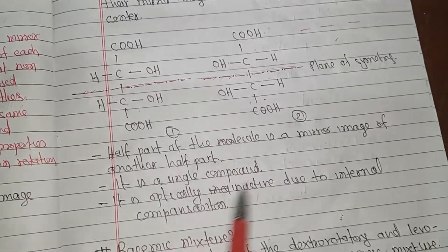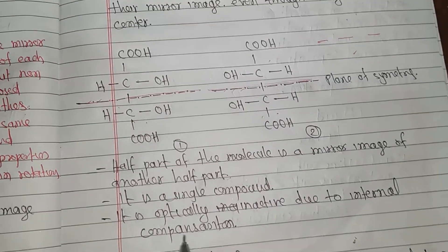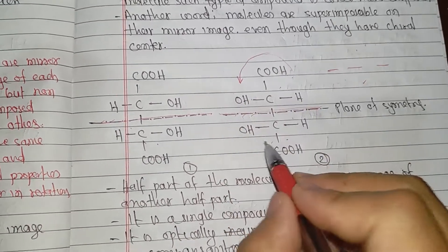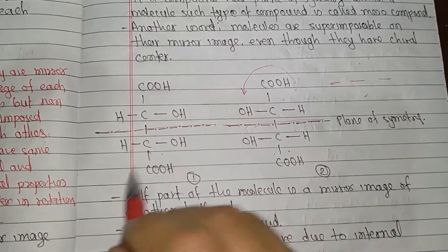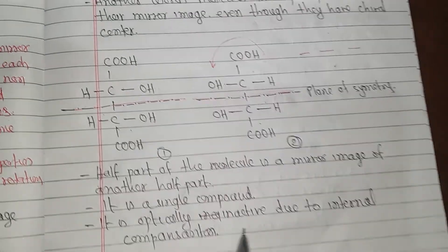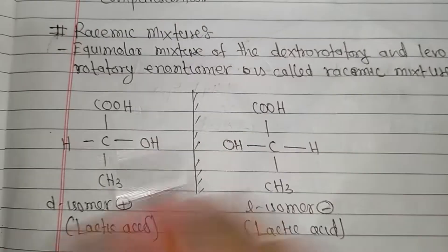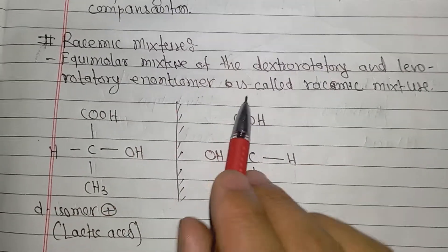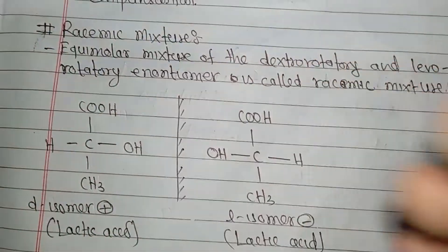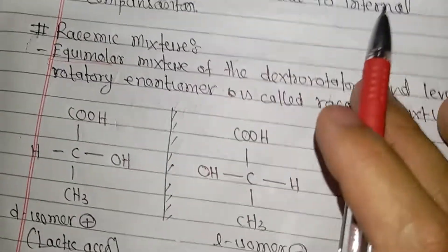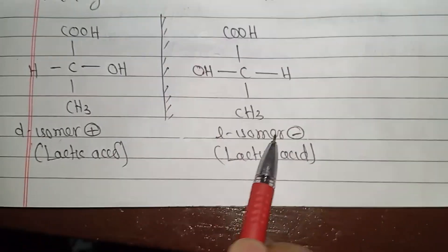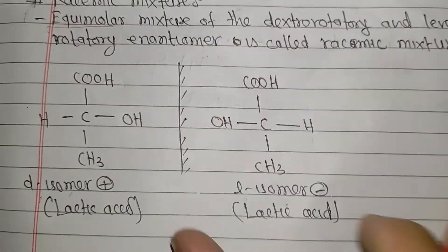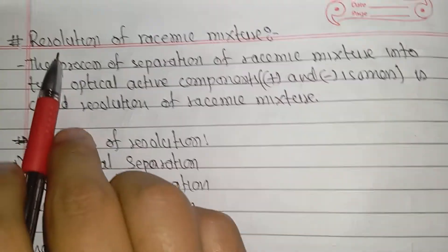A meso compound is a single compound and it is optically inactive due to internal compensation. The equal mixture of enantiomers — dextrorotatory and levorotatory — is called a racemic mixture. You can see D isomers and L isomers mixed, as in racemic lactic acid. The last topic is the resolution of a racemic mixture.